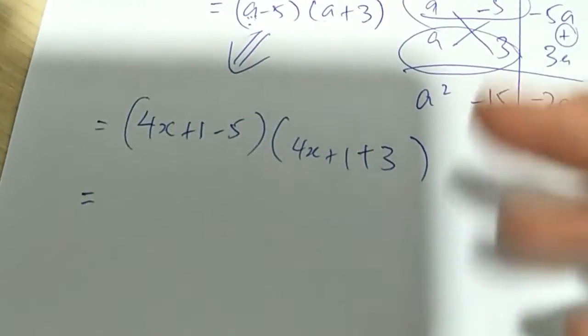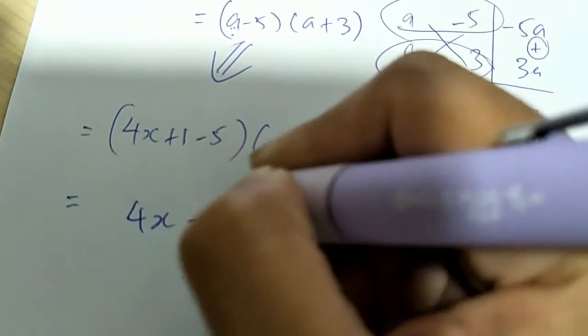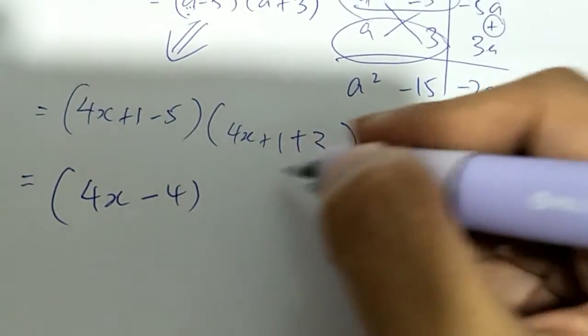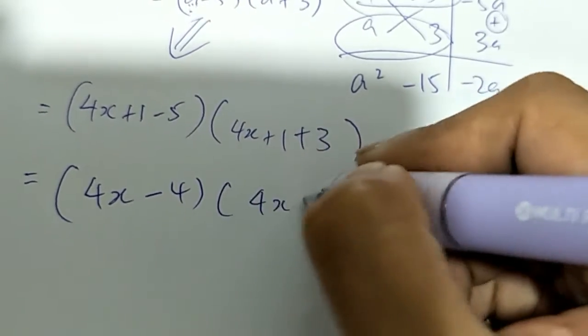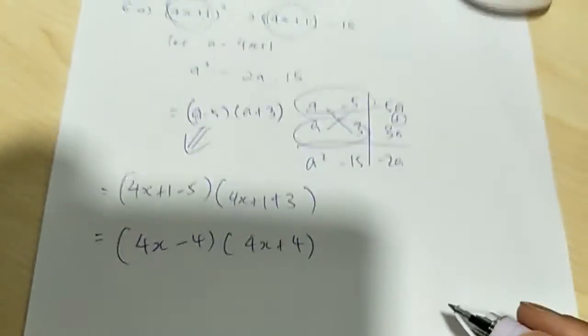So when I simplify this, it looks like this: 4x minus 4 and then this one is 4x plus 4. Right? Okay. So now that's done.